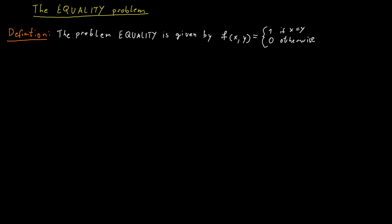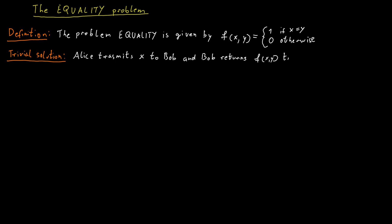So the function just measures whether x and y are equal, so whether Alice and Bob have exactly the same input. Our naive solution again would be for Alice to transmit her entire input to Bob, and then Bob comparing it to his input and then returning the result to Alice. Since Alice has n bits, she can communicate this to Bob using n bits and then Bob can communicate the result using one additional bit. So the total communication here is n plus one bits. The question is whether we can do better than that.